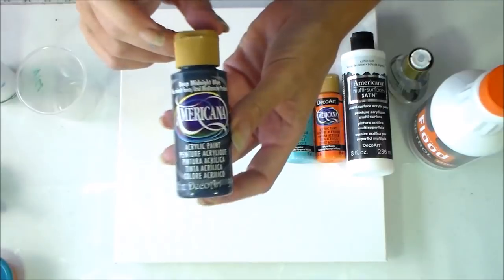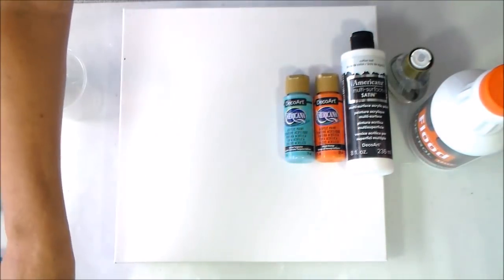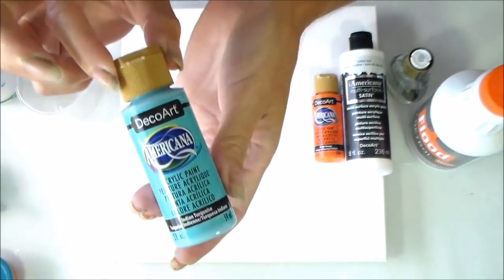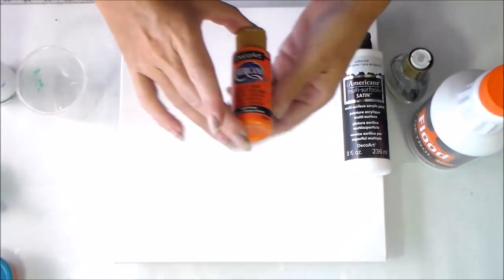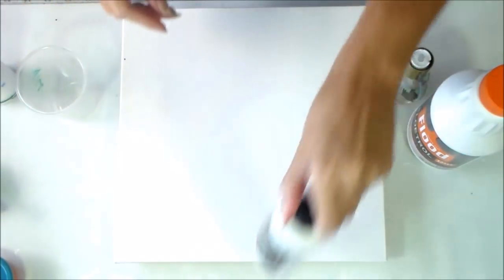Then this one is deep midnight blue and it really is very very dark, near black. Then I have Indian turquoise, this one's lovely, look at this one, very nice. And bright orange, ta da, and of course my white.